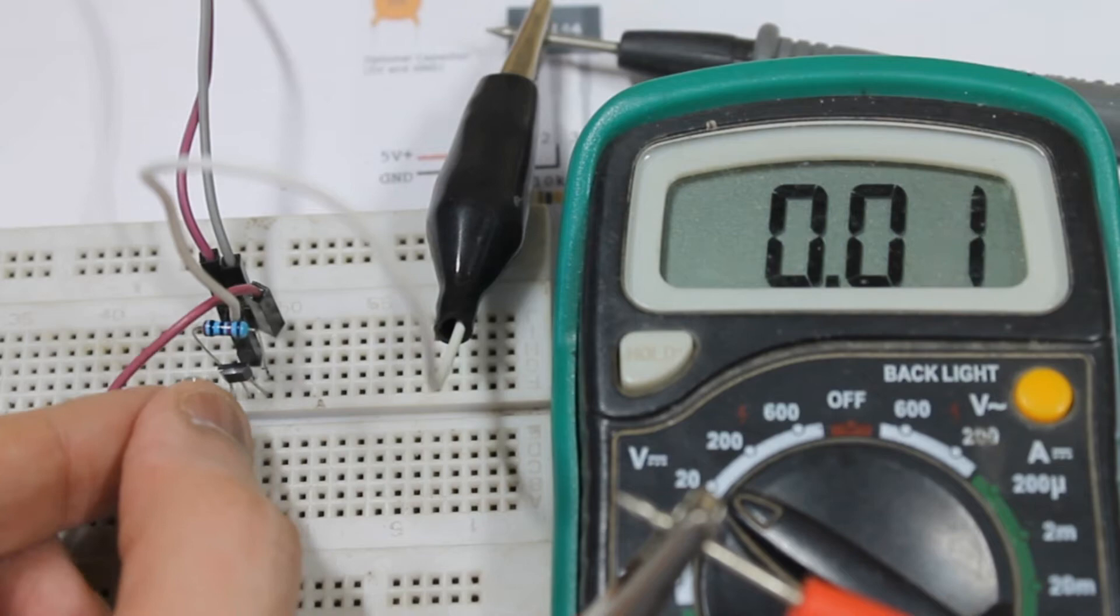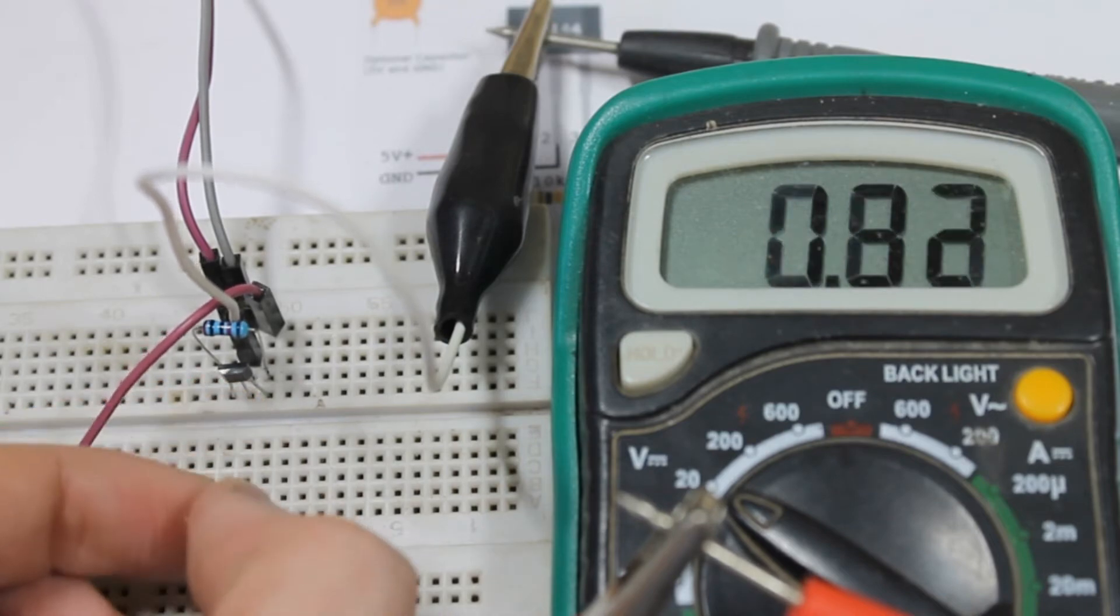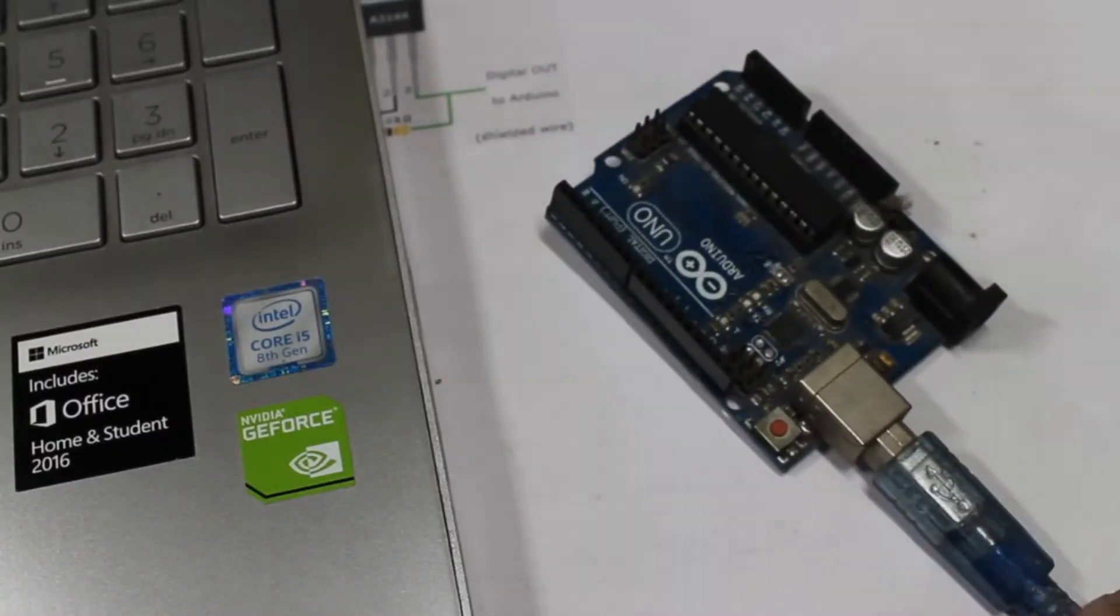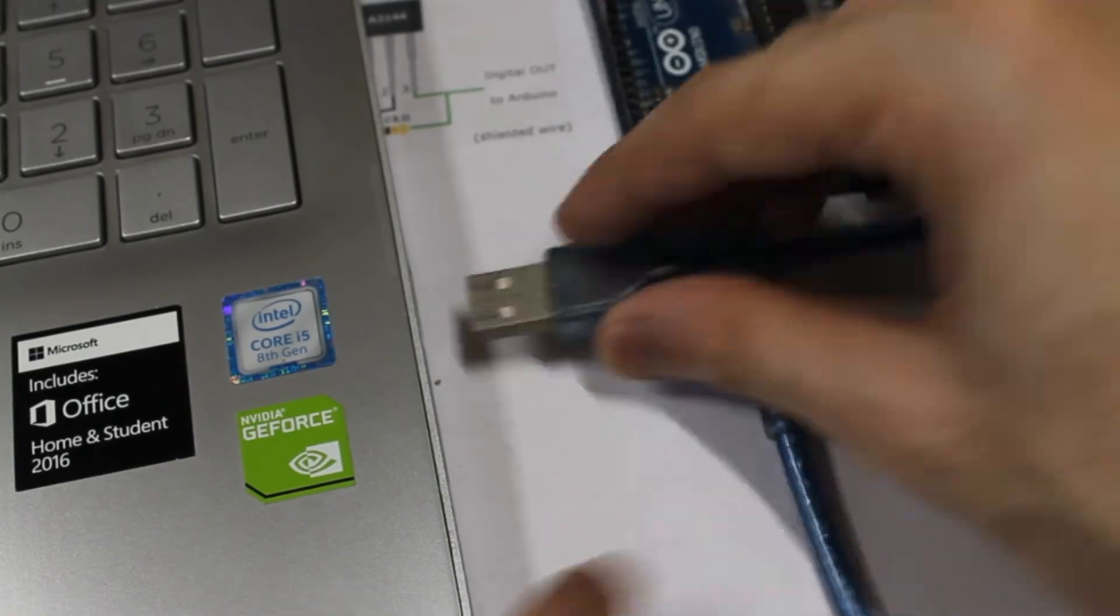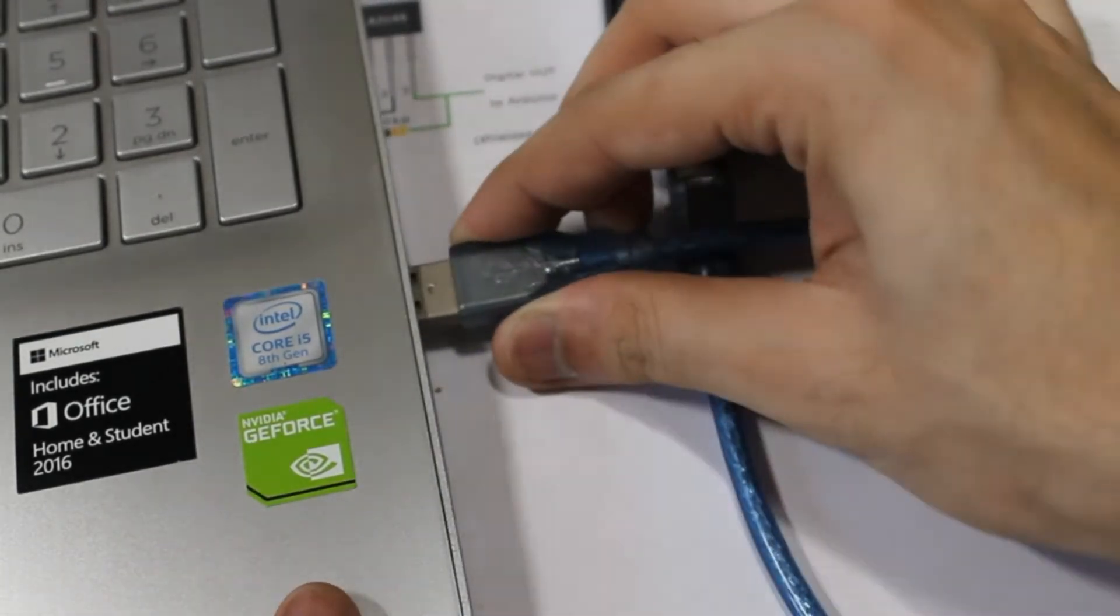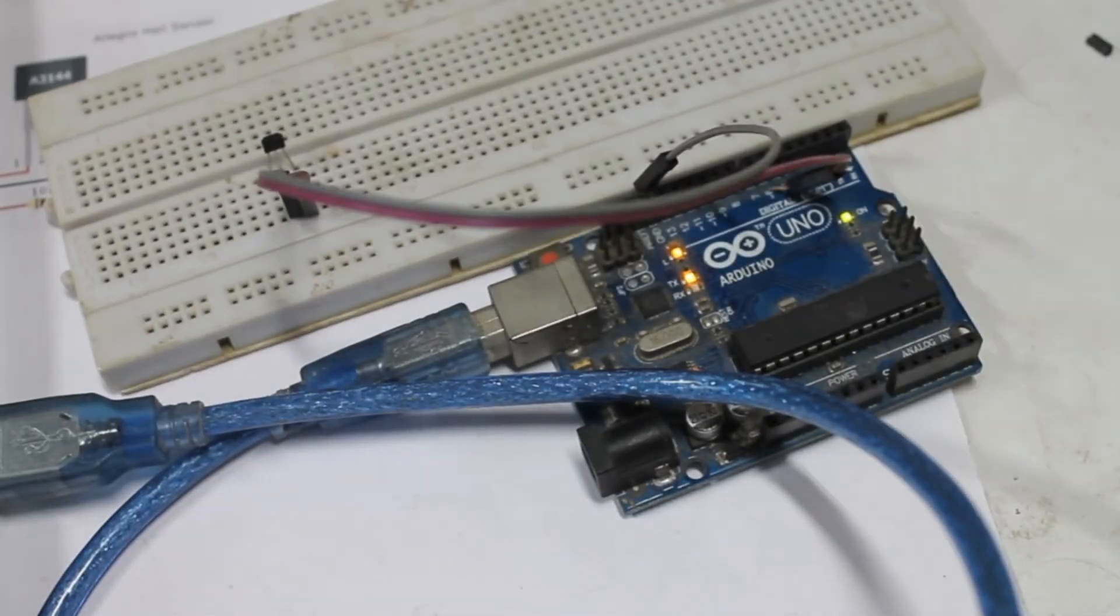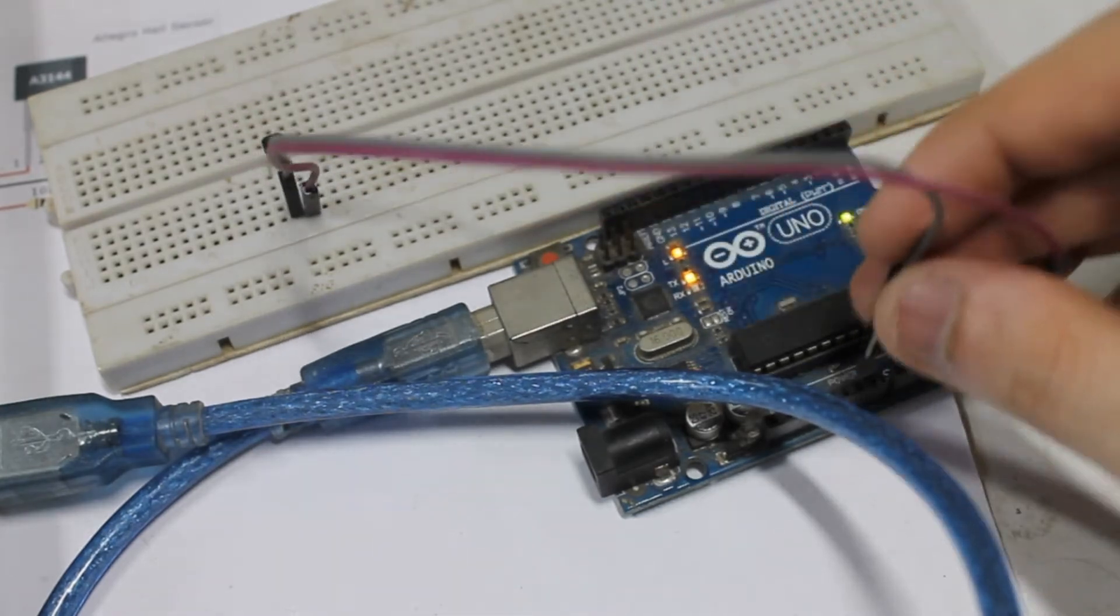After making this discovery, it was now time to connect the project to the computer with Arduino. With the Arduino's integrated pull-up resistor, we don't need the resistor that we put on the breadboard and we can directly connect it to the Arduino.